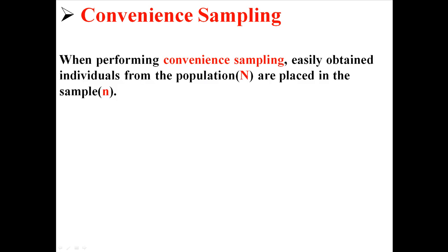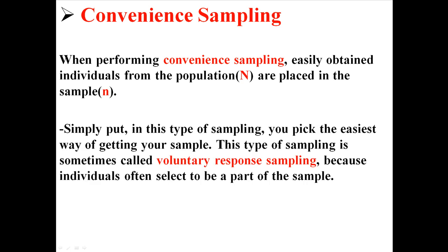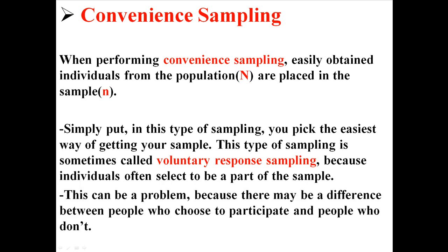And there is convenience sampling, the easiest, laziest, and also kind of the worst way of sampling. When performing convenience sampling, easily obtained individuals are placed into the samples. Simply put, in this kind of sampling you pick the easiest way of getting people into your sample. This can also be called voluntary response sampling because individuals often select to be a part of it, like you'd call them on the phone or send them a letter. But this can be a problem because there may be a difference between people who choose to participate and people who choose not to.